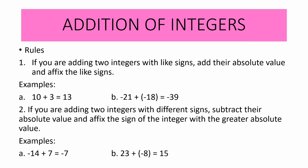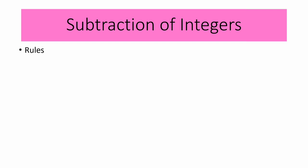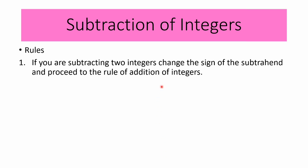Now let us proceed with the subtraction of integers. The rule: if you are subtracting two integers, change the sign of the subtrahend and proceed to the rule of addition of integers. In symbol, with M for the minuend and S for the subtrahend, the expression becomes: minuend, change the operation from subtraction to addition, and change the sign of the subtrahend to its opposite.